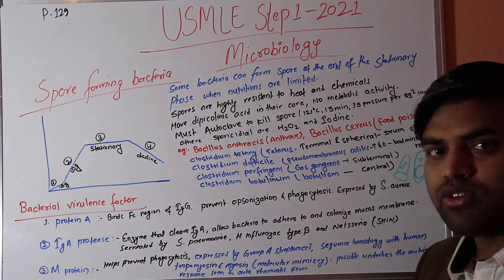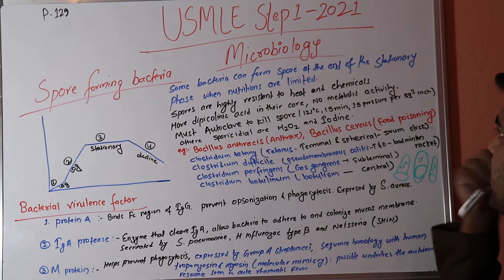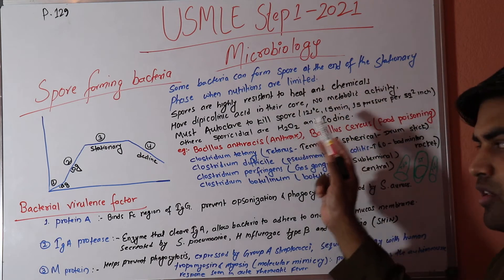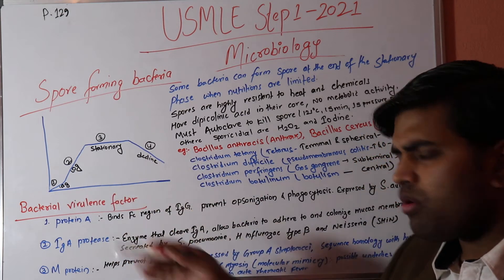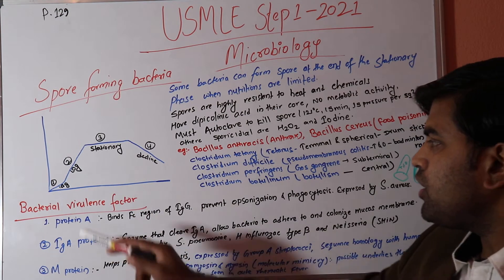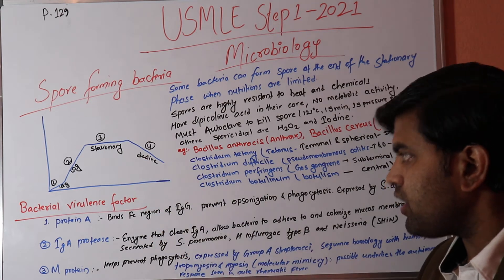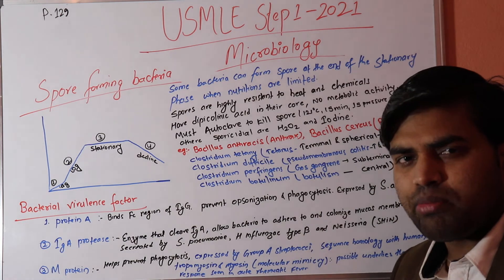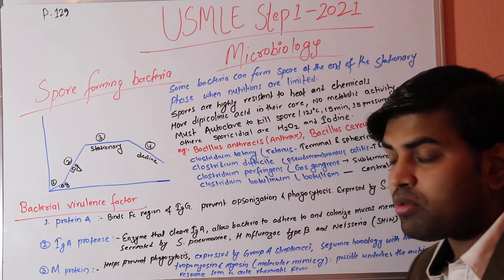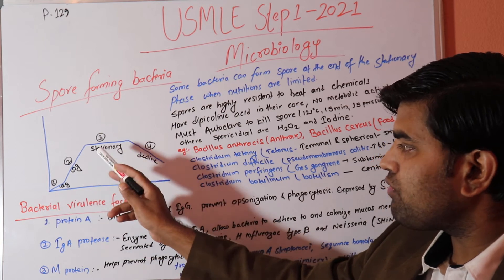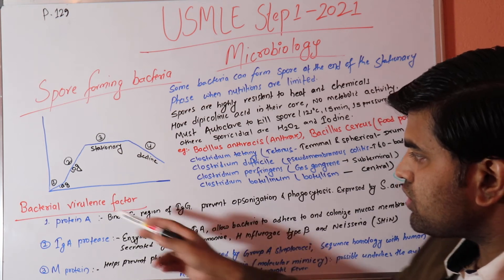Bacteria form spores at the end of the stationary phase when nutrition is limited. To understand this, you need to know the bacterial growth cycle. There are four phases: lag phase, log phase, stationary phase, and decline phase. In the lag phase, bacteria prepare for multiplication but do not yet multiply. After four to six hours they enter the log phase and begin multiplying.